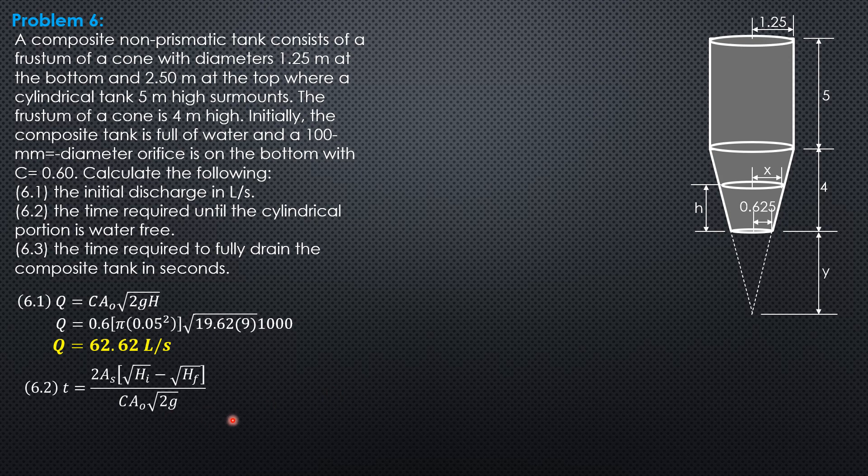So time is 2 × π(1.25)² × (√9 - √4) over 0.6 × π(0.05)² × √19.62. Cancel out π. So time is equal to 470.3 seconds.